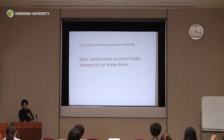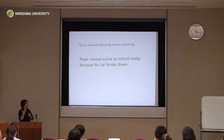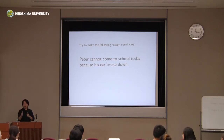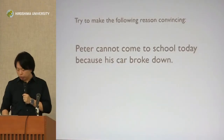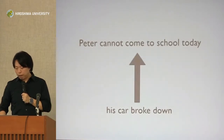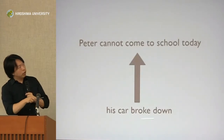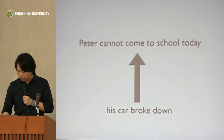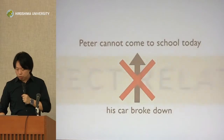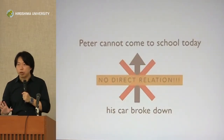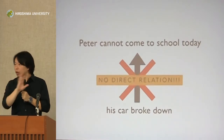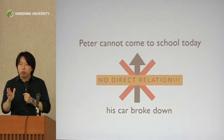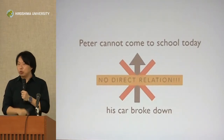This is not convincing. I will give you five minutes to think about what is needed in order to make the connection between the two convincing. His car broke down as the reason or evidence to support the claim that Peter cannot come to school today is not convincing because there's no direct connection, no direct relation — just like 'Peter has a house in our way' and 'Peter is in our way.' There's no direct relation. What I want you to do is introduce a direct relation.